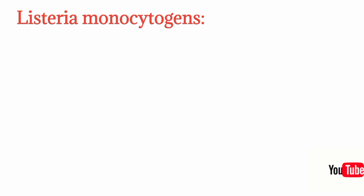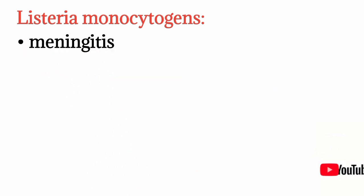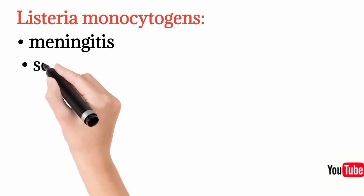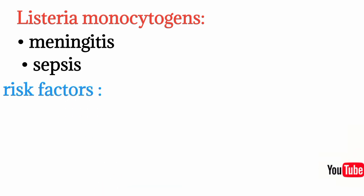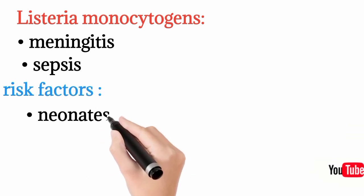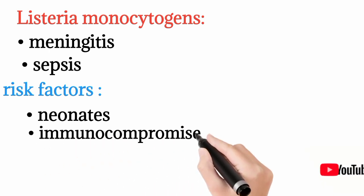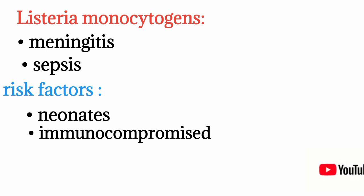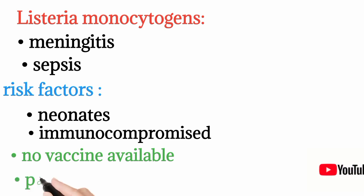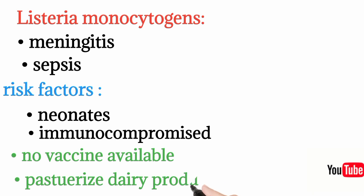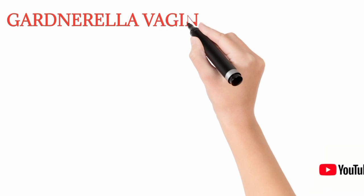Listeria monocytogenes causes two main diseases: meningitis and sepsis. It particularly causes meningitis in neonates and in immunocompromised patients such as renal transplant patients on immunosuppressive drugs. No vaccine is available; pasteurizing dairy milk products can help prevent it, as unpasteurized dairy products are a known source.